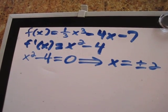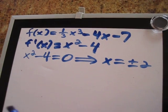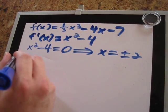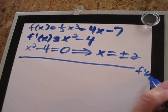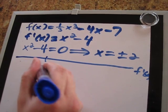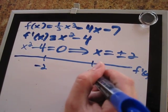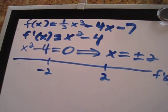So now we have the critical numbers of the function. What we do is we draw a number line, and we mark off f prime of x, and we mark off the critical numbers on the number line. So now we have three intervals here.